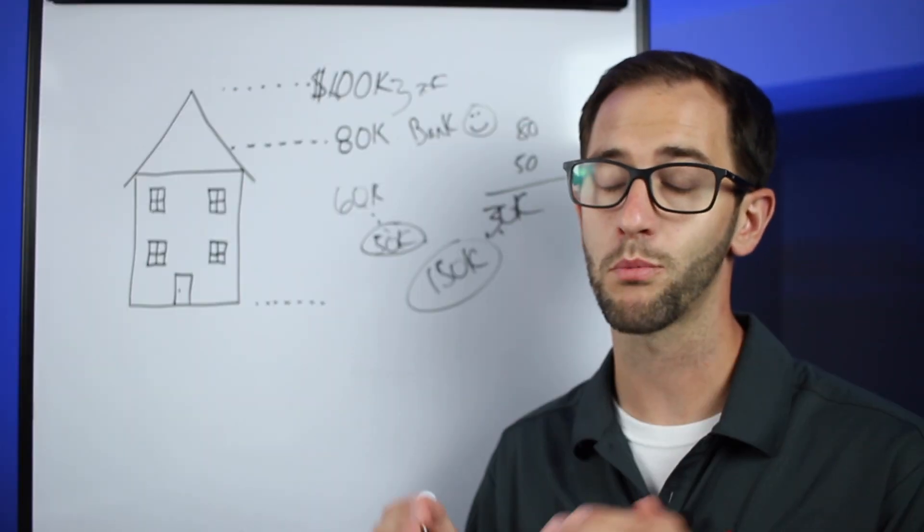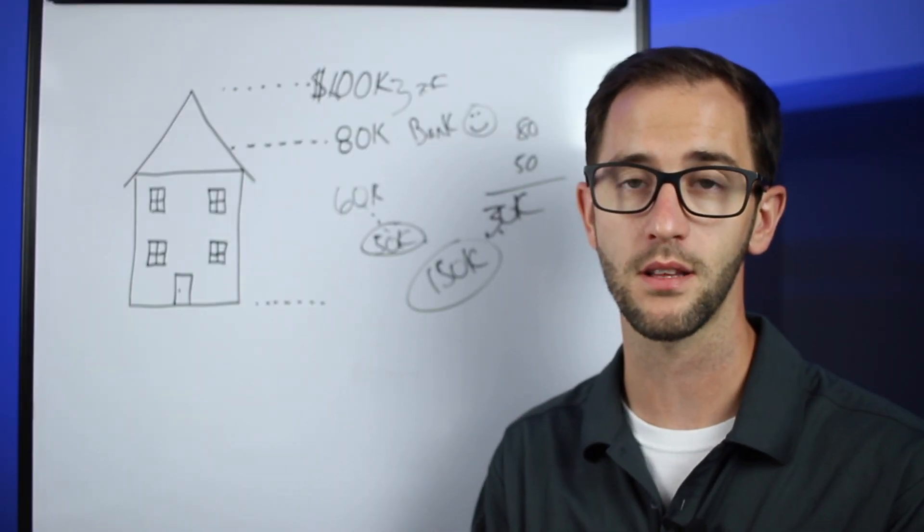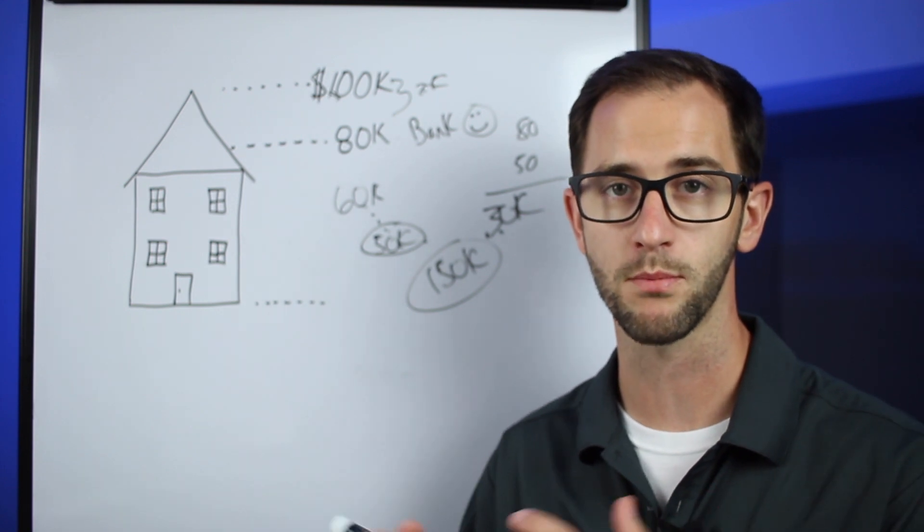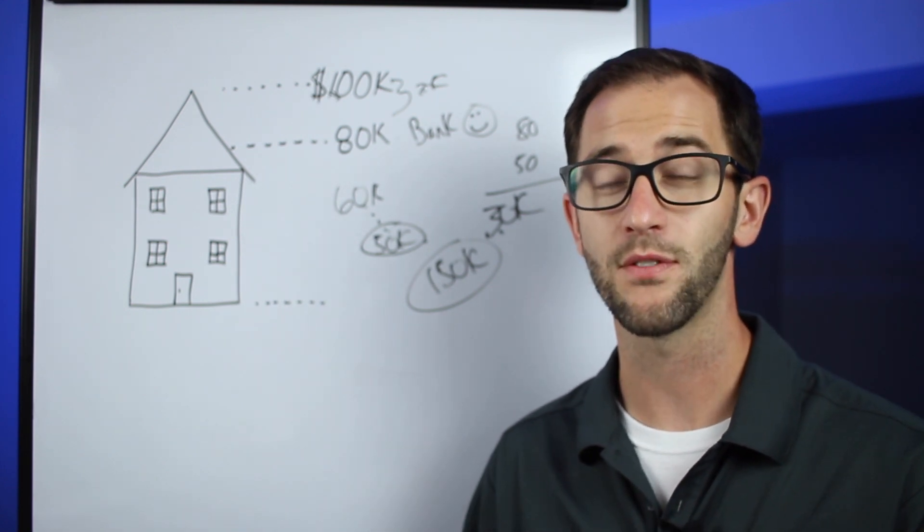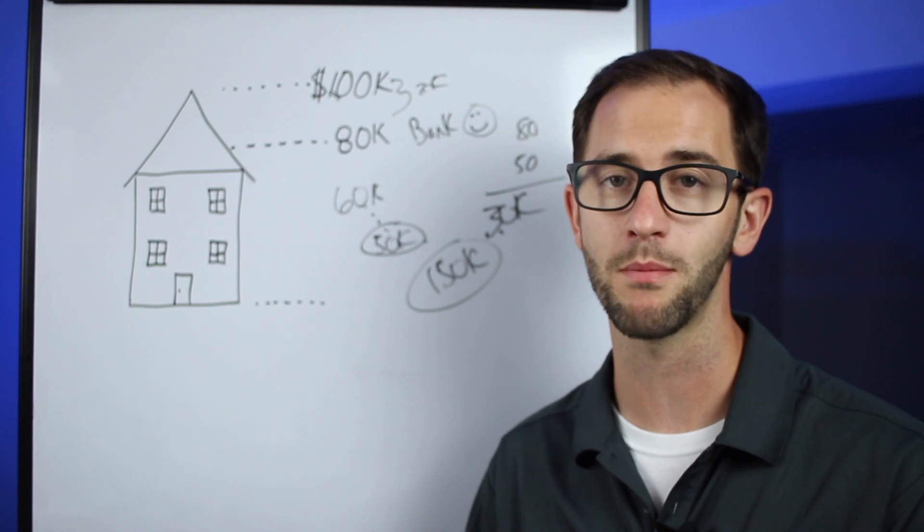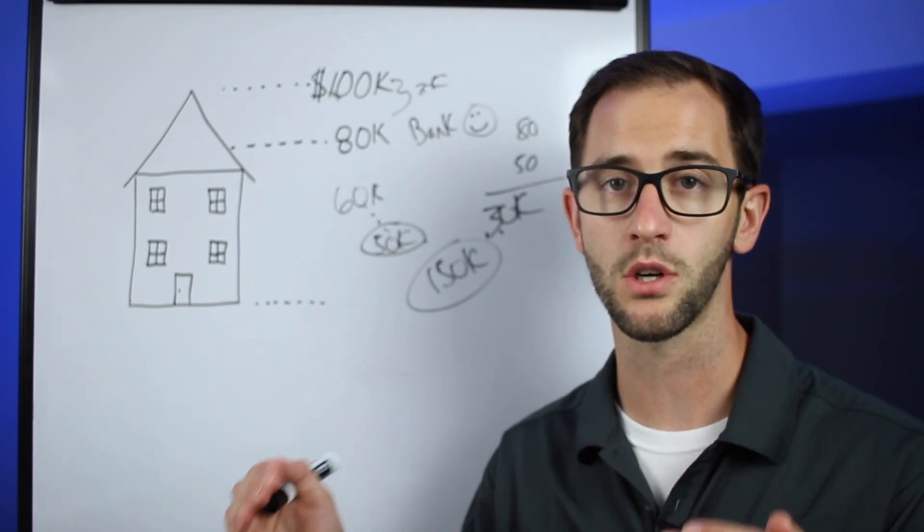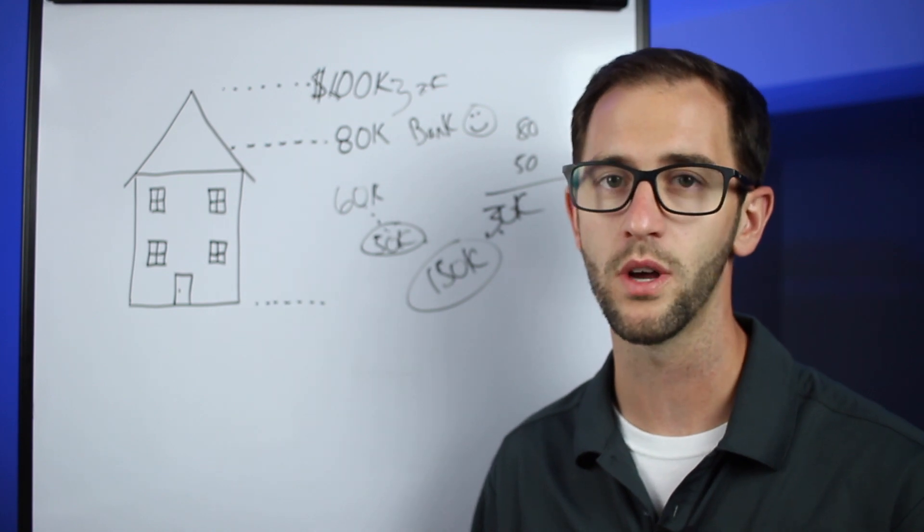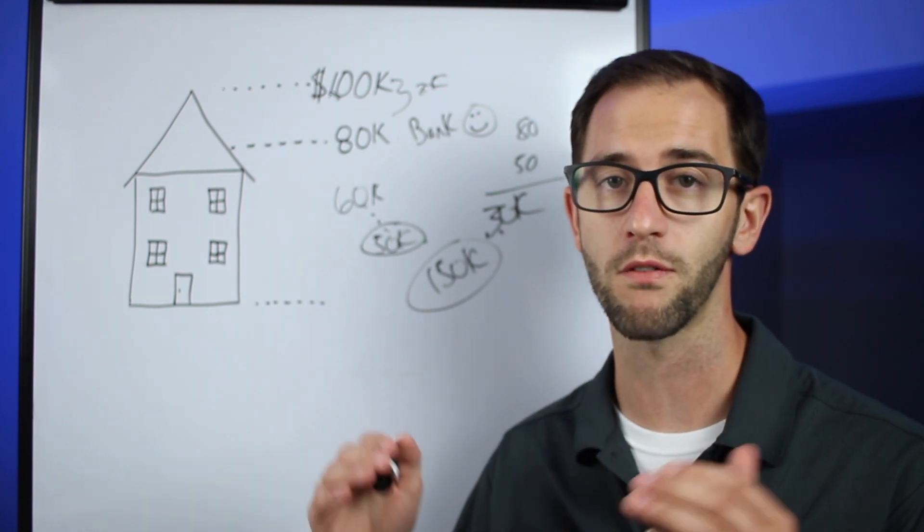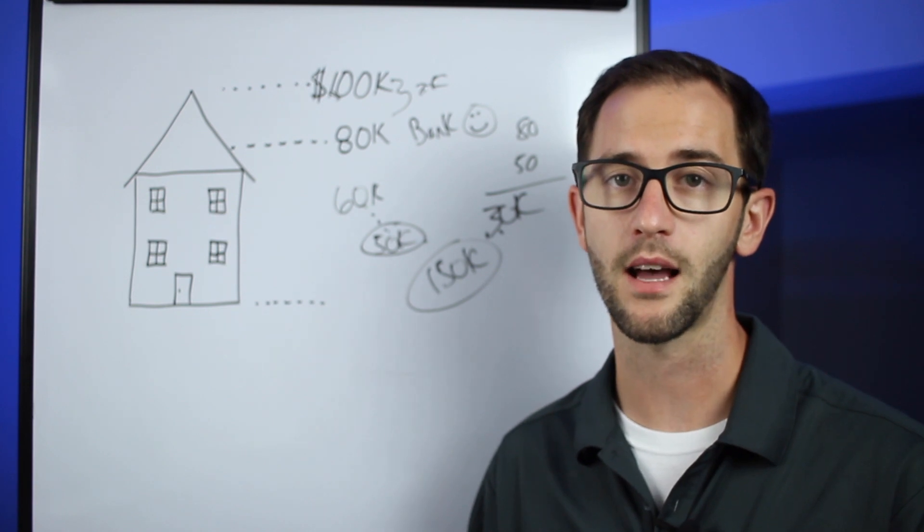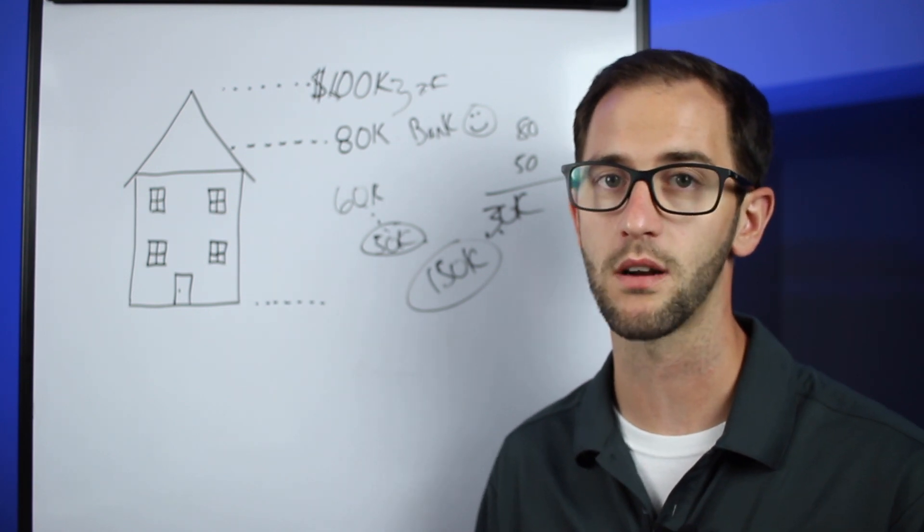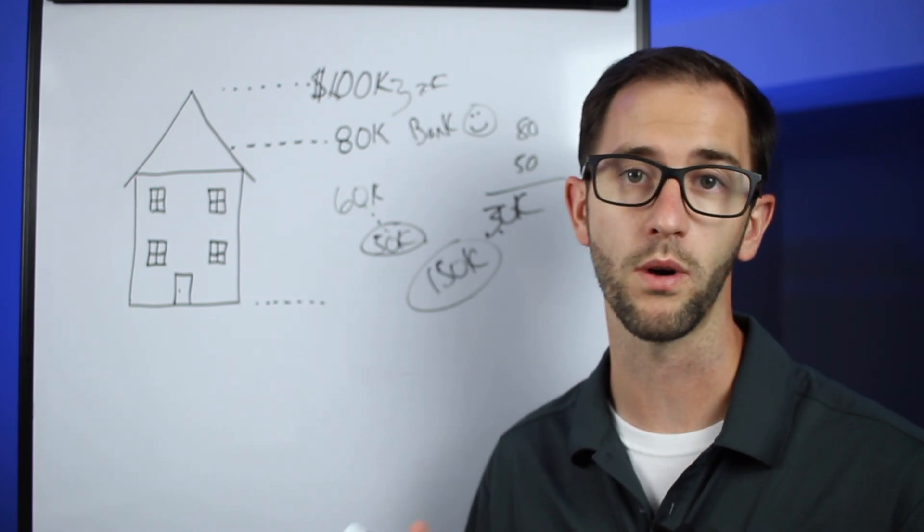It is interest-only, so the pro there is it's a little bit less than it likely would be if it was principal and interest. But the downside is if you continue to just make that minimum payment you're never going to pay that balance off, and at the end of your HELOC term which is usually ten years or so, you'll have a balloon payment where you'll be required to pay the full balance at that time which can become a little scary if that's something you weren't aware of.